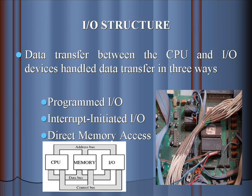Input/Output Structure: Data transfer between the CPU and input/output devices is handled in three ways. The first way is Programmed Input and Output. The second way is Interrupt Initiated Input and Output. The third way is Direct Memory Access (DMA).